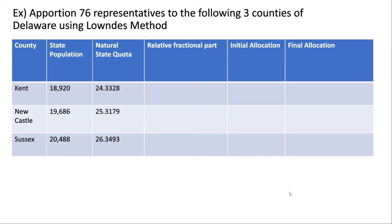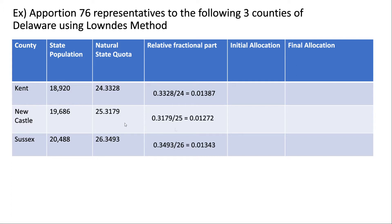Let's look at this example: apportion 76 representatives to the following three counties of Delaware using Lowndes' method. We did this apportionment using Hamilton's method previously; now we'll see what happens with Lowndes' method. Here is all of the work we did last time — we found the natural state quotas. Now we go through and find the relative fractional part for each county. For Kent, the natural state quota's decimal is 0.3328; we divide that by 24 to get a relative fractional part of 0.01387. Remember to include the decimal and divide it by the whole part of the number.